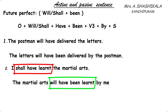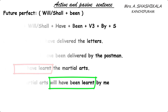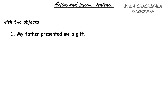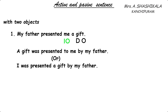We have written all sentences with one object. Now here is an example with two objects — direct object and indirect object. For example: 'My father presented me a gift.' To identify the direct object we ask 'what', and for two objects we ask 'to whom'. Here 'me' is the indirect object and 'a gift' is the direct object. We can write the answer in two ways: 'A gift was presented to me by my father,' or 'I was presented a gift by my father.'